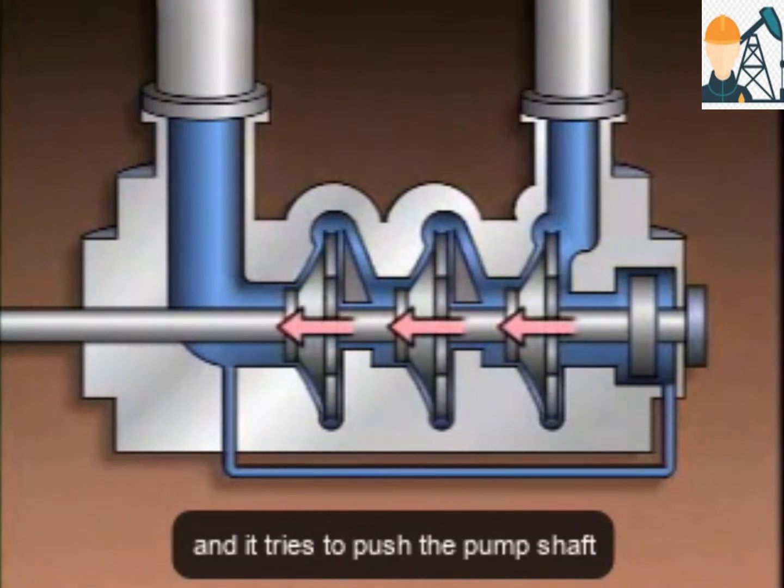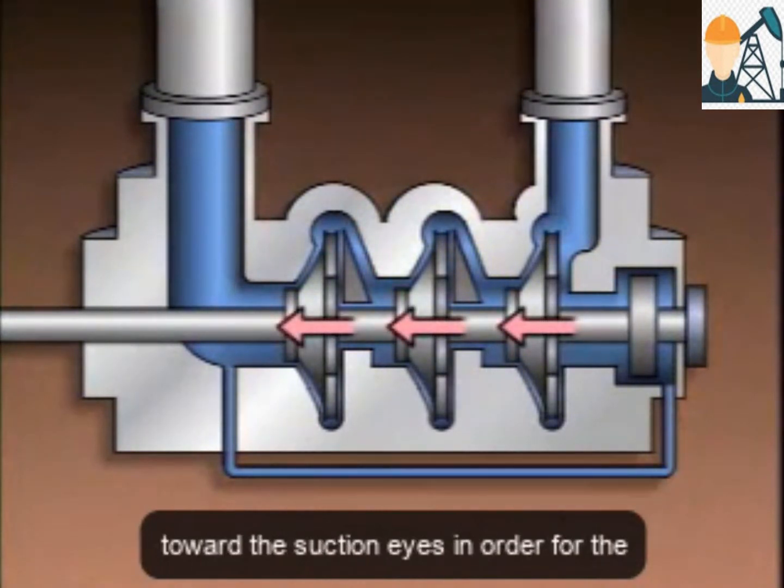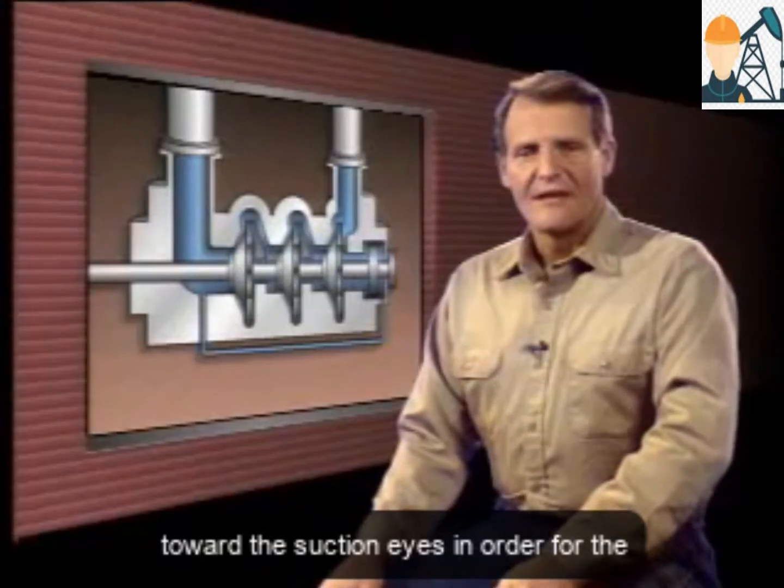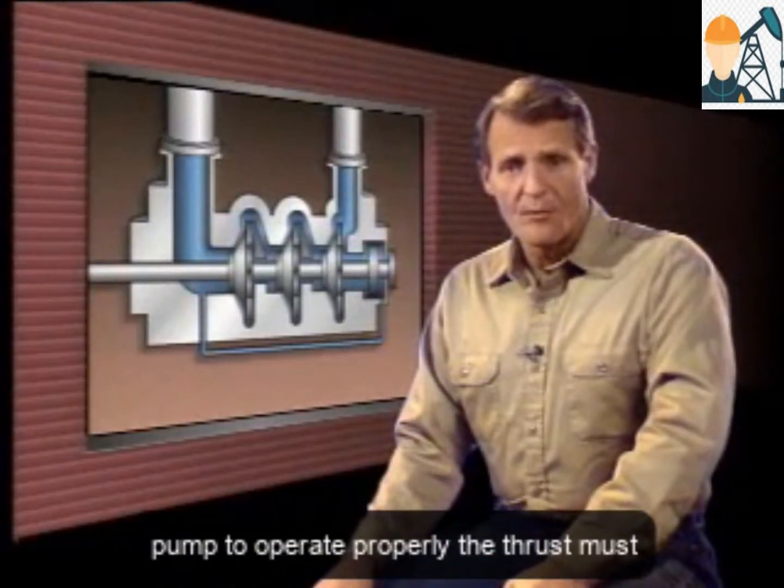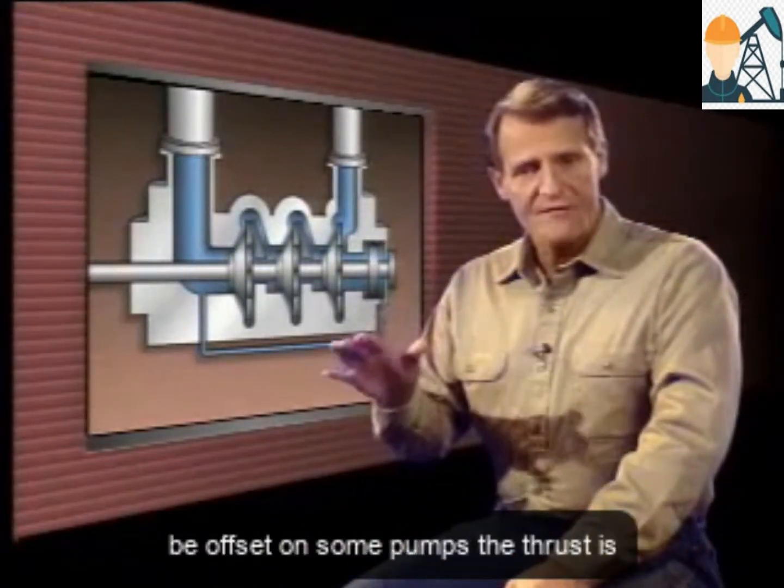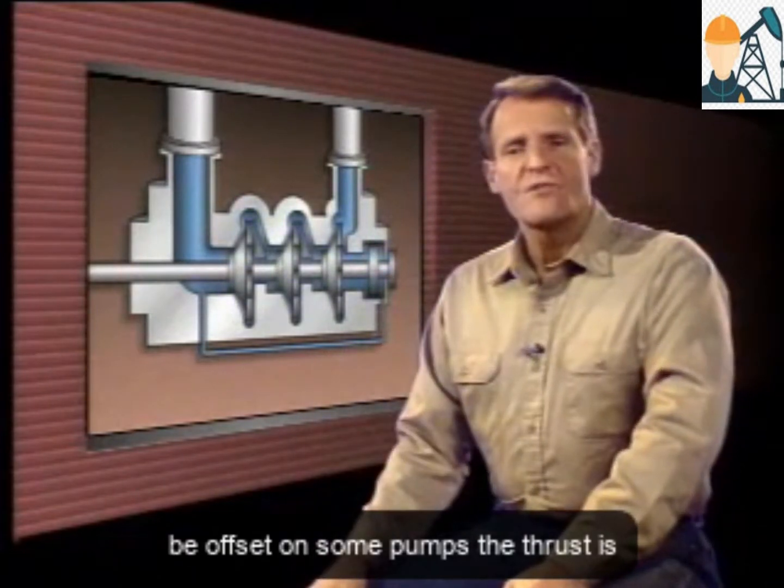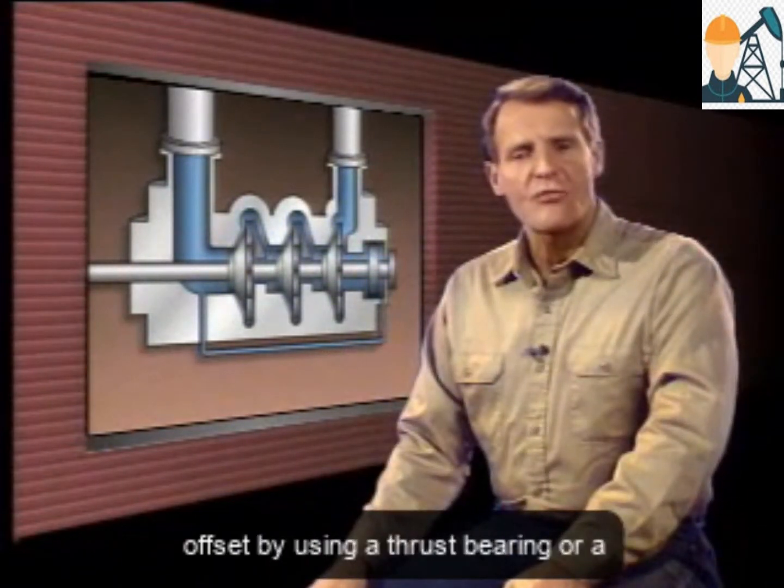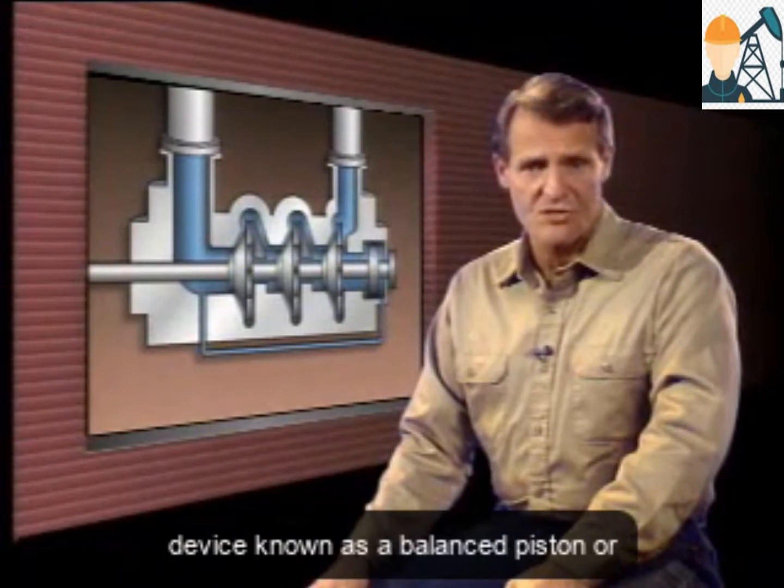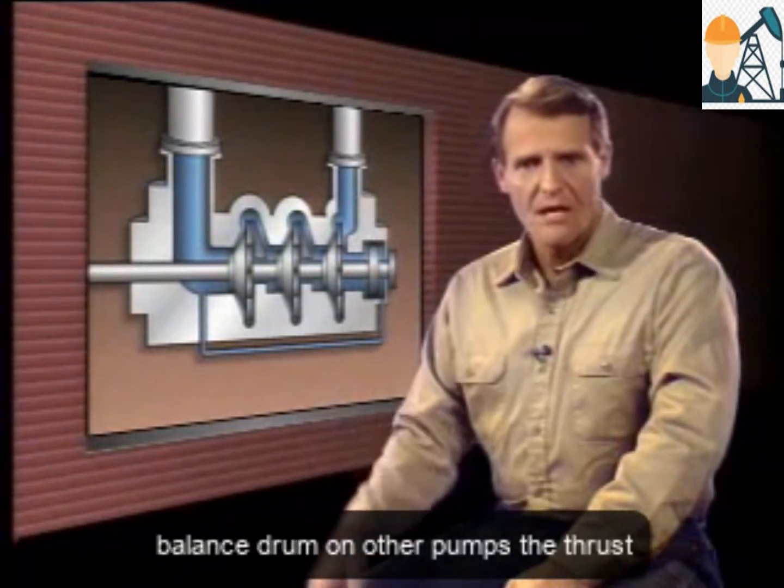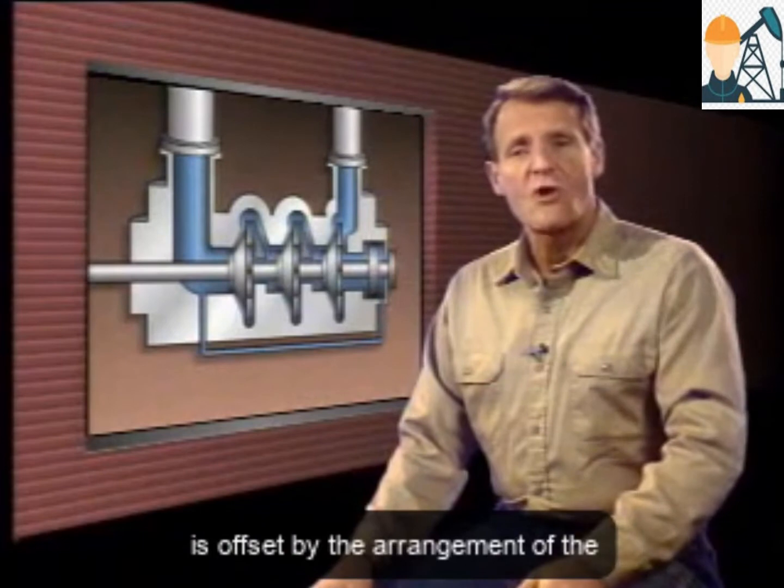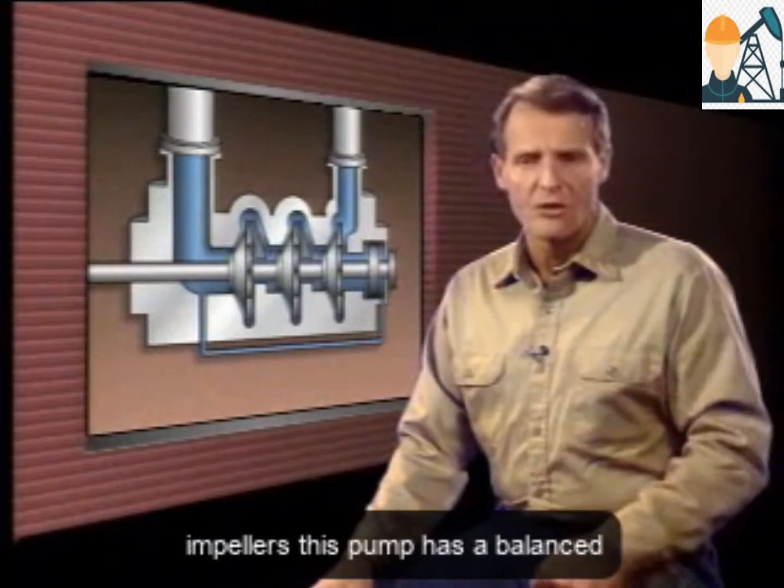And, it tries to push the pump shaft toward the suction eyes. In order for the pump to operate properly, the thrust must be offset. On some pumps, the thrust is offset by using a thrust bearing or a device known as a balance piston or balance drum. On other pumps, the thrust is offset by the arrangement of the impellers.